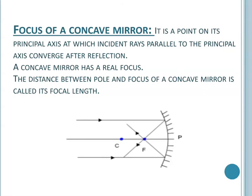Focus of a concave mirror: the principal focus or focus of a concave mirror is a point on its principal axis at which incident rays parallel to the principal axis converge after reflection. The rays which are parallel to the principal axis come from infinity, and after reflection all the parallel rays of light converge at one point on the principal axis — that point is called focus, denoted by capital F.